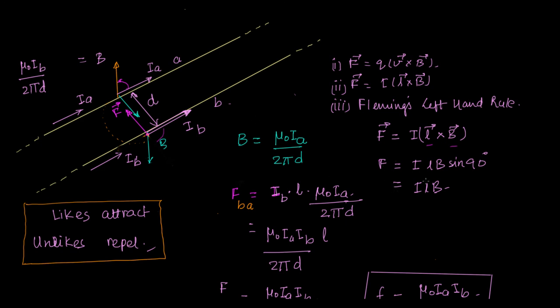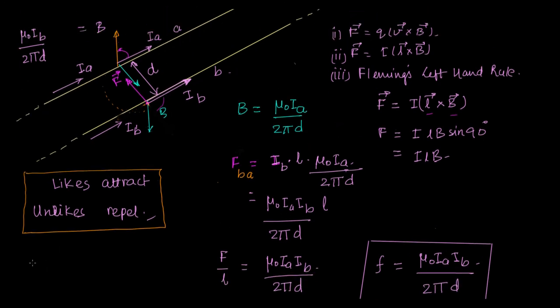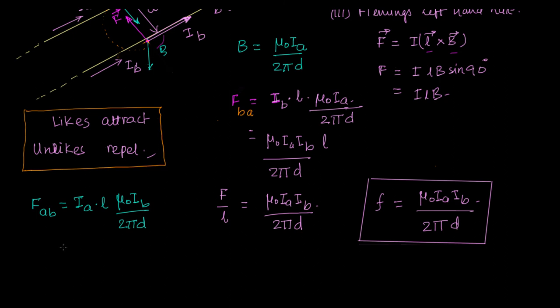Do we see that? It is in this direction. Now what is that force? Let us try to get that. And this time it is force on A due to B. So I say FAB is I LB. I, but this time I is IA and L is L and B is mu0 IB upon 2 pi D. So FAB is mu0 IA IB L upon 2 pi D.